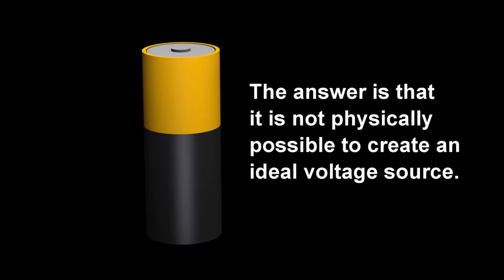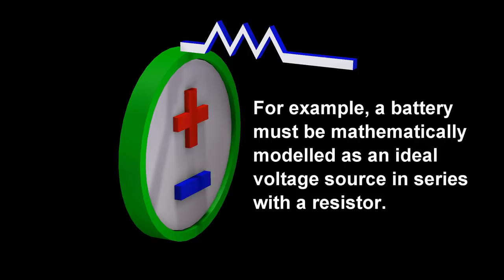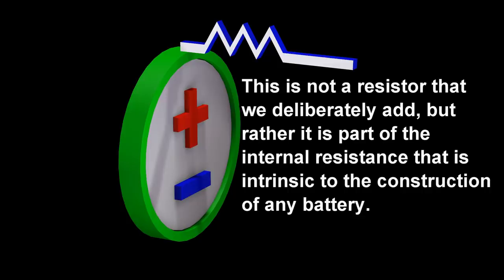For example, a battery must be mathematically modeled as an ideal voltage source in series with a resistor. This is not a resistor that we deliberately add, but rather it is part of the internal resistance that is intrinsic to the construction of any battery.